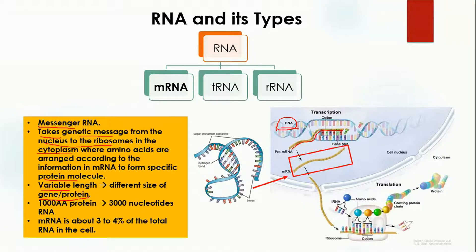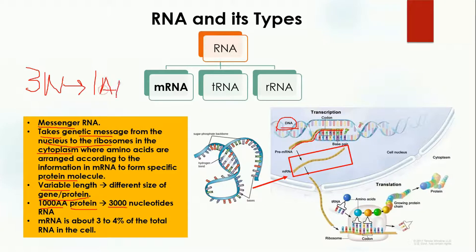If a gene is large, the messenger RNA will be large; if the gene is small, the mRNA will be small. For example, if a protein is made up of 1000 amino acids, the mRNA size will be 3000 nucleotides — because three nucleotides form one codon encoding one amino acid, so 1000 amino acids multiplied by three gives 3000 nucleotides.